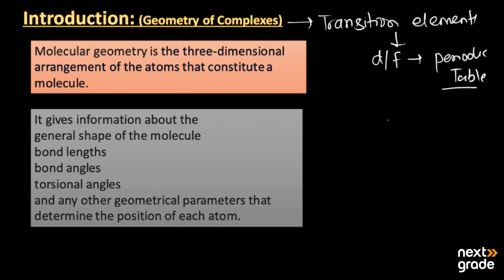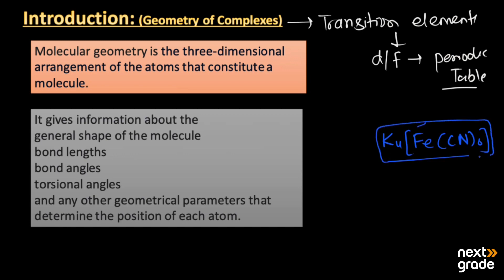Complexes are compounds in which there is a central atom. For example, K4[Fe(CN)6] — the name of this compound is potassium ferrocyanide hexacyanide, in which the oxidation state of iron is +2. This is a simple example of a complex compound.